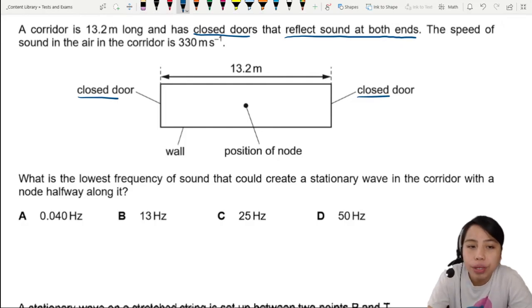At the ends of these two, there must be nodes. Nodes mean there is no vibration.